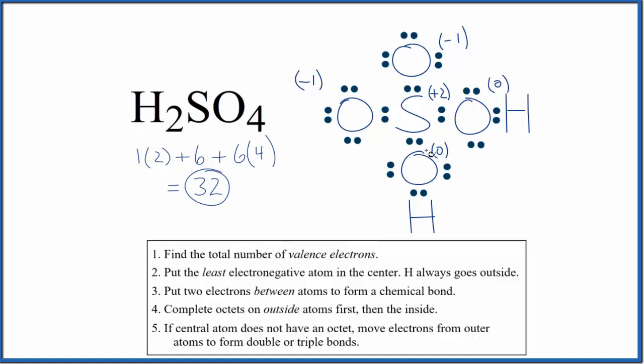With Lewis structures, we want the formal charges to be as close to zero as possible for each atom. If you need help calculating formal charges, there's a link at the end of this video. So what we can do here is if we move these electrons here between the oxygens and the sulfurs, that changes our formal charges so that everything is zero.